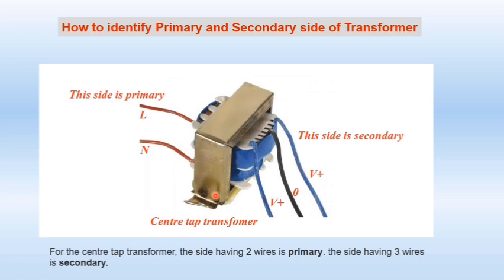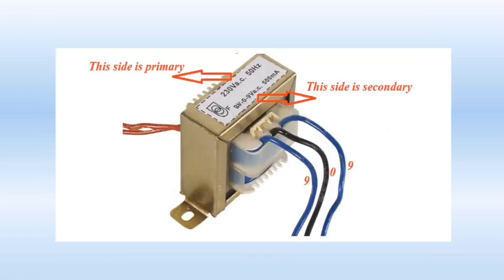This is possible in the case of a center-tap transformer, where we have a minimum of three wires at the output. The center one is common, and the first and third wires are for a particular voltage. The first and third wire will give you 12 volts, and the center one gives zero volts. To get 12 volts, connect your load to the first and middle wire — the black one. For 24 volts, connect your load between the two blue wires.